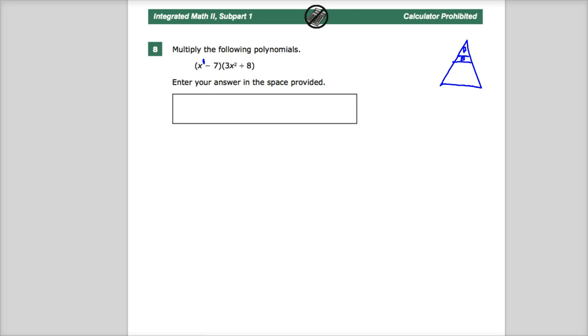This is the order of operations pyramid. Parentheses comes first, exponents, multiplication, division. And that's left to right. You could divide first as long as it's on the left.